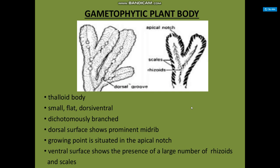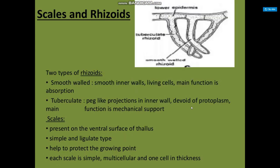The ventral surface shows the presence of a large number of rhizoids and scales. Two types of rhizoids are found in Riccia: smooth-walled and tuberculate. Smooth-walled rhizoids have smooth inner walls with living cells; their main function is absorption. Tuberculate rhizoids have peg-like projections on the inner wall, are devoid of protoplasm, and their function is mechanical support.